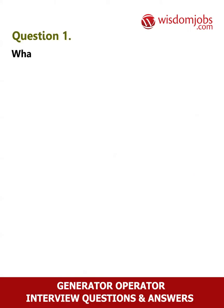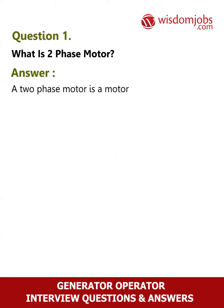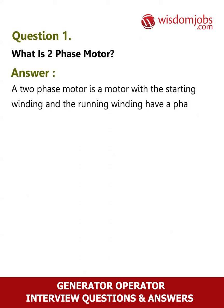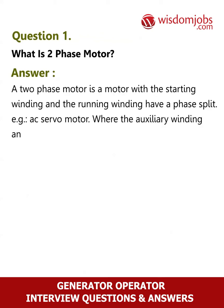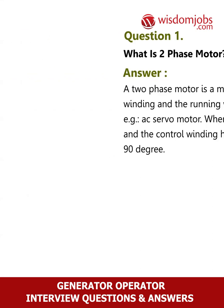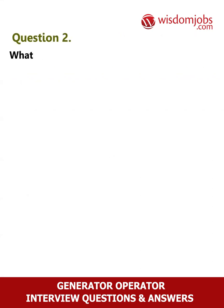Question 1: What is a two-phase motor? Answer: A two-phase motor is a motor with the starting winding and the running winding having a phase split. For example, an AC servo motor where the auxiliary winding and the control winding have a phase split of 90 degrees.